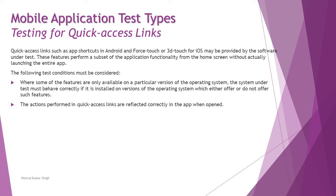Also, actions performed via a quick access link must be reflected correctly in the app when it is opened. Whatever interaction you did through the shortcut — for example from the desktop icon — when you open the app later, you should find all that interaction saved in the app. Data migration and integration should take place at every point, so you can find all information passed during that quick access link interaction.